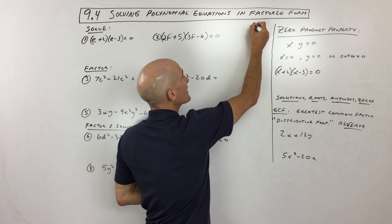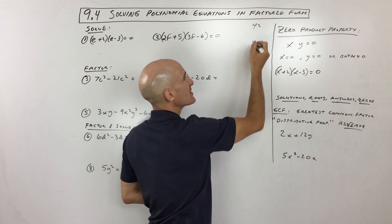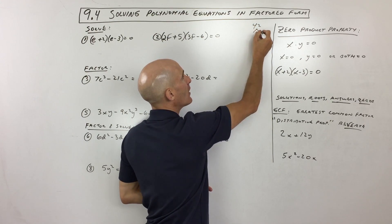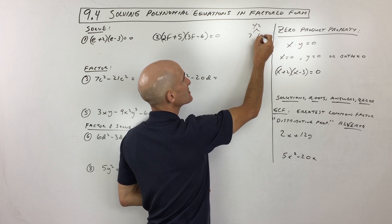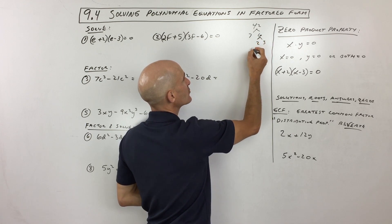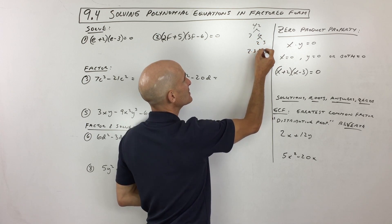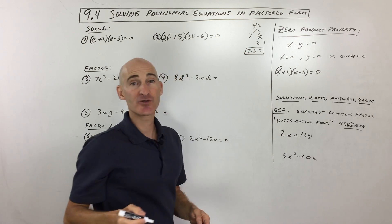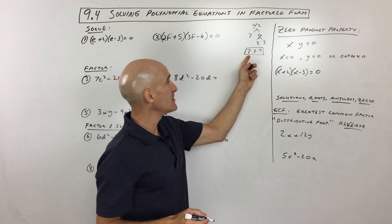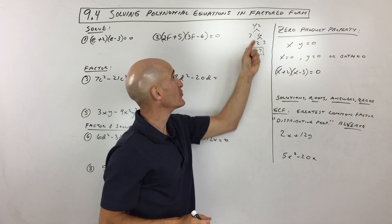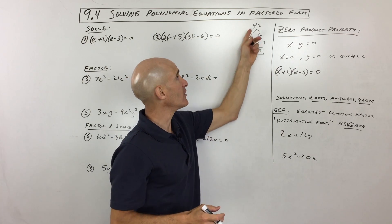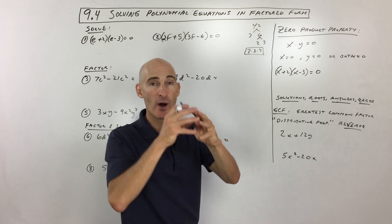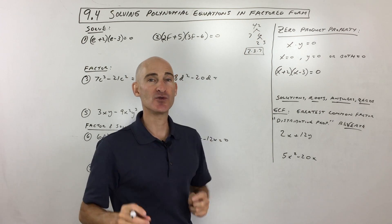Kind of like when you did a prime factorization tree with numbers — we said 42 is 7 times 6, and then 6 is 2 times 3. So 2 times 3 times 7 is the prime factorization. These are the factors; if you multiply them together, you get back the original 42. So these are equivalent — it's just that one is broken down into its components.